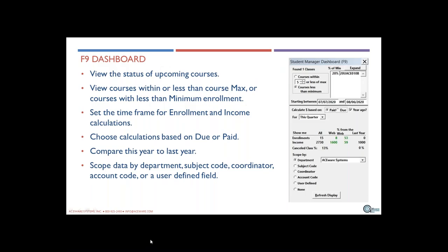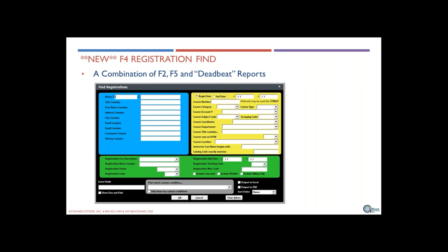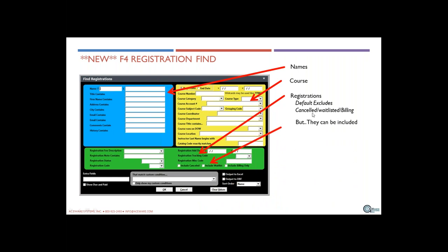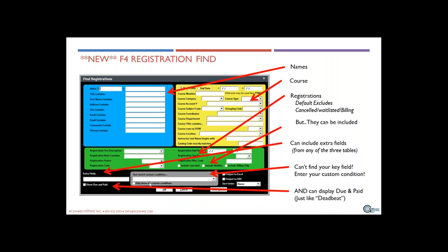Now the best for last — F4. This was released in the June conference release, and it's really a combination of F2, F5, and Deadbeat all in one. You can use a number of criteria to find particular names and combine that with criteria on courses and on registrations. You can include cancelled registrations, waitlisted, or billing, and add additional fields with a custom condition.